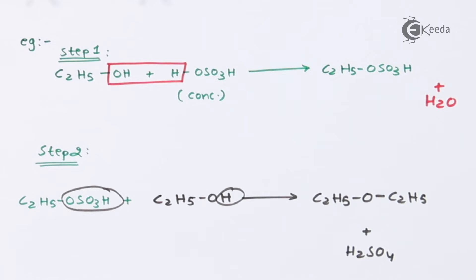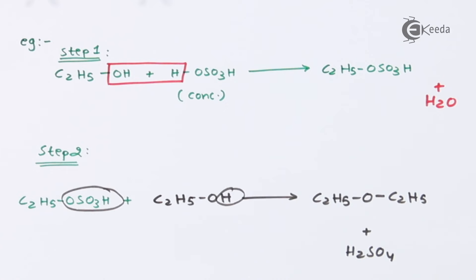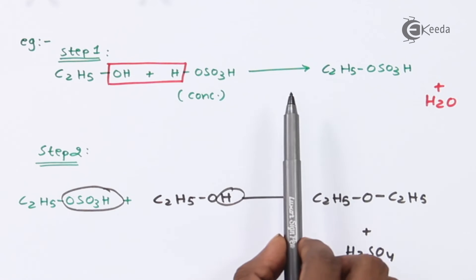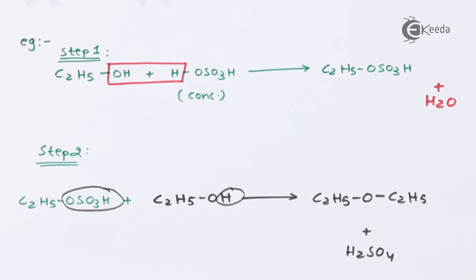This reaction is known as continuous etherification. The H₂SO₄ liberated at the end of the reaction reacts with more alcohol molecules, converting them into ethyl hydrogen sulfate, which then reacts with another alcohol to form more ether — regenerating H₂SO₄ again. This process continues until all the alcohol has been converted into ether.